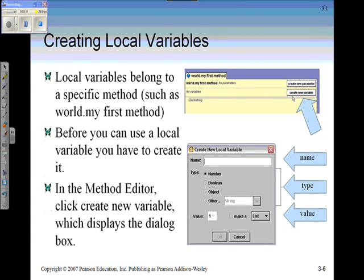Local variables that belong to a specific method, such as in the tile, the my first method, you have to first click on the create new variable tile in order to create the variable so you can use it later on. In the method editor, it displays a dialog box asking for three pieces of information: the name, the data type, and the value.